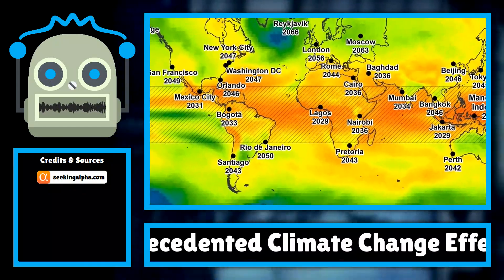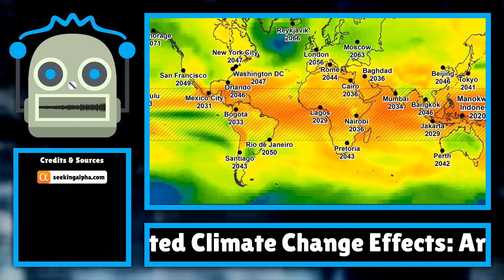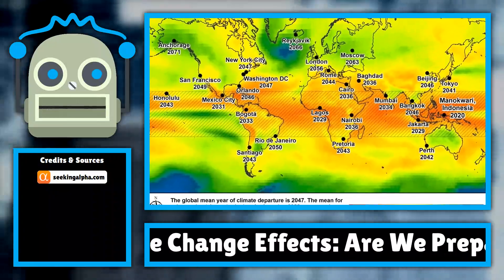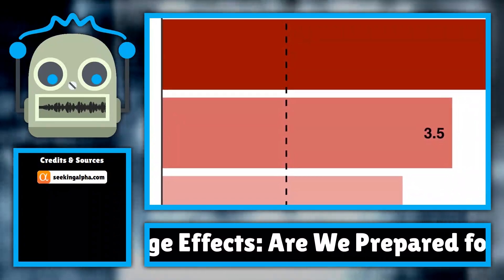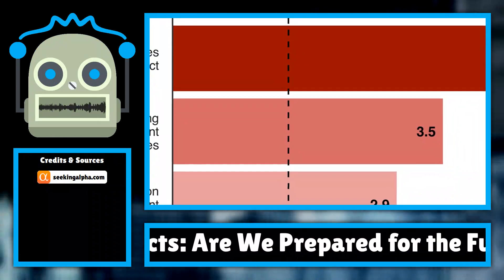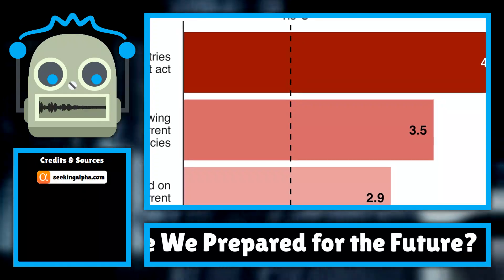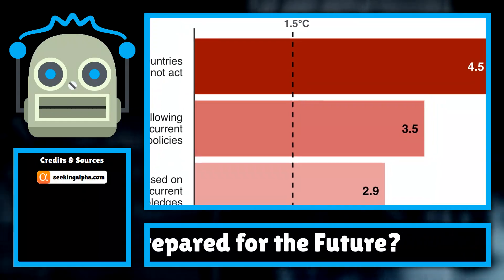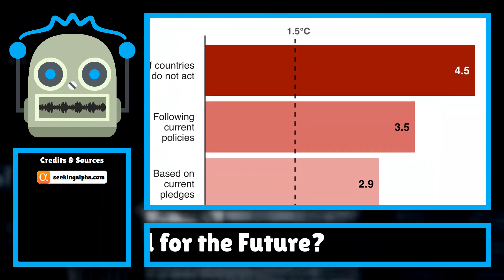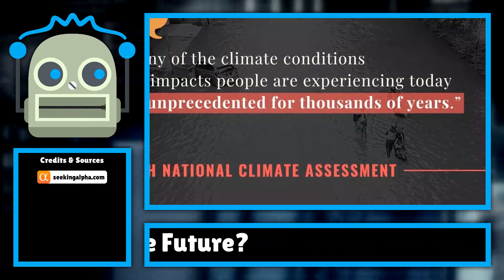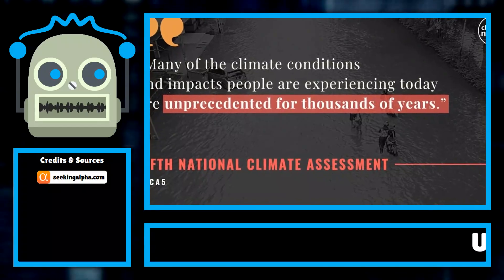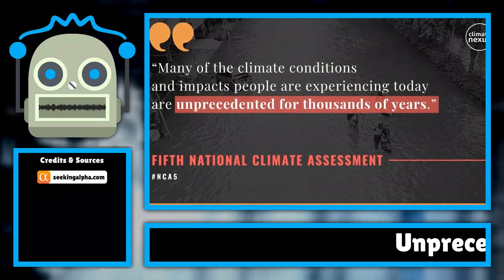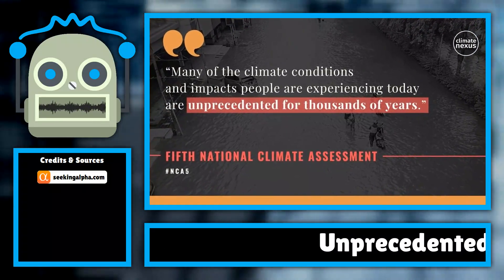Agriculture is another sector feeling the brunt of climate change. Farmers are struggling to adapt to shifting weather patterns that disrupt planting and harvesting schedules. Droughts in the Midwest and floods in the South have resulted in crop failures and food shortages. The United Nations has warned that climate change could push an additional 100 million people into extreme poverty by 2030, exacerbating food insecurity and malnutrition.